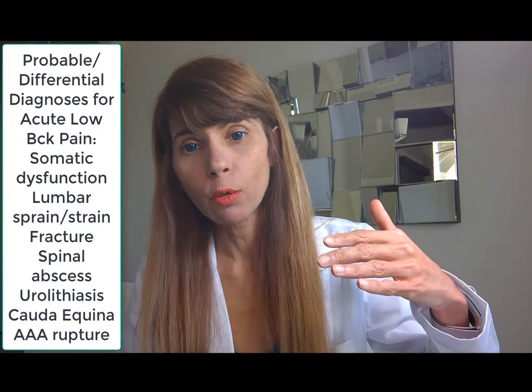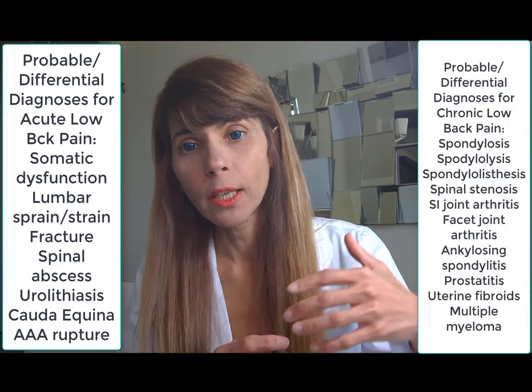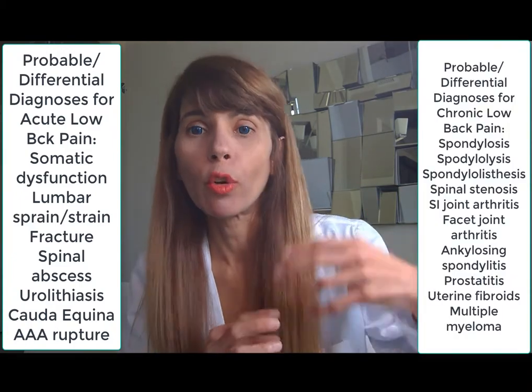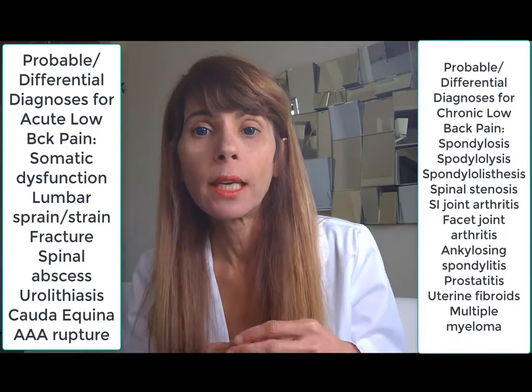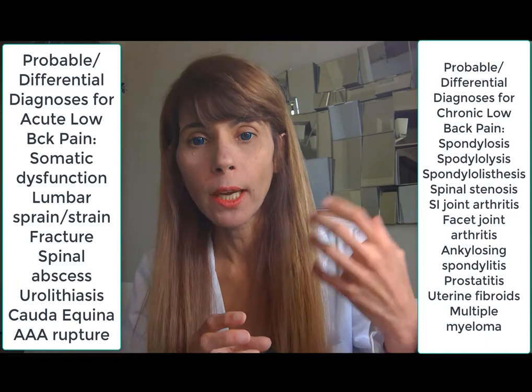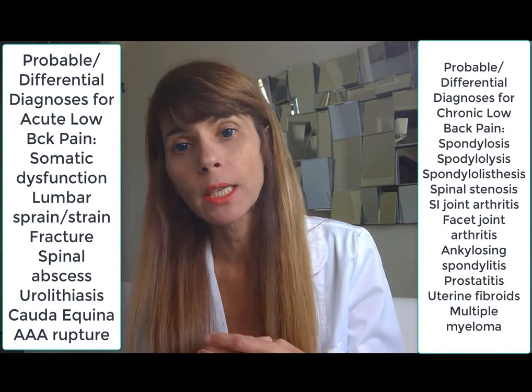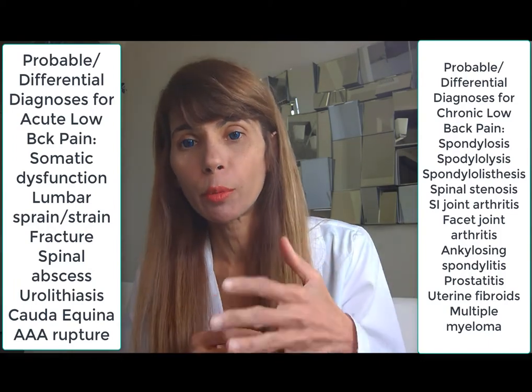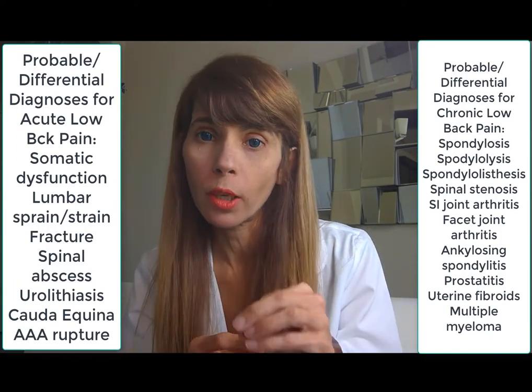When it comes to approaching a patient with low back pain using the etiological approach, the first and foremost thing to do is to create a list of probable diagnoses or differential diagnoses in an organized manner. In this mind map, we've used acute and chronic back pain as two categories, and then they are further subdivided into smaller categories.